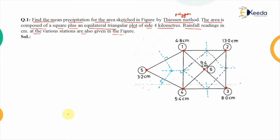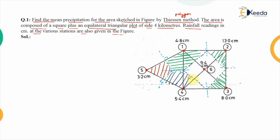The next step is that each enclosed area must contain at least one rain gauge station. The area encompassed by the first polygon contains station five. The green-colored area contains station one. Similarly, another area contains station two, another contains station three, another contains station four, and the remaining area corresponds to the readings from station six.